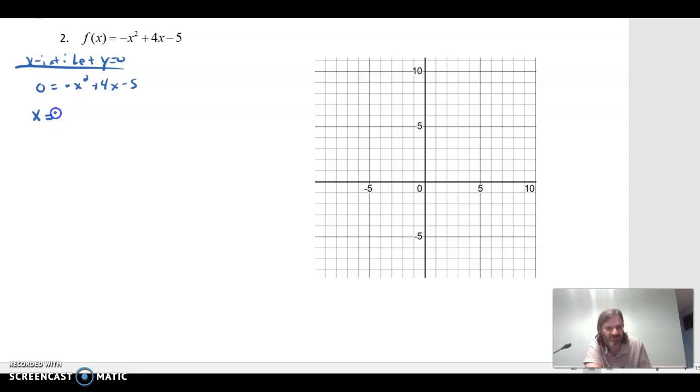So quadratic formula, negative b will be negative 4 plus or minus square root of 4 squared, that's 16 minus 4ac, so that'll be minus 20, and that is all over 2a, so all over negative 2. I got negative 4 plus or minus the square root of negative 4 all over negative 2. If I'm trying to take the square root of negative 4 that's not a real number. So what that means is no x intercepts because there's nowhere to plot that.